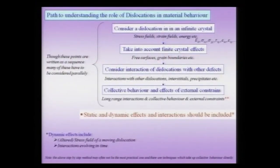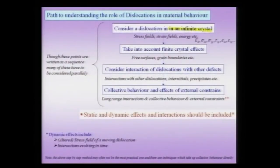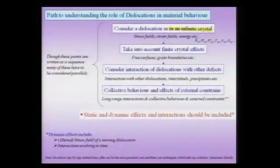To understand the role of dislocations in material behavior, similar to the path we undertook for understanding any kind of defect, we will first consider an isolated dislocation in an infinite crystal. This is an ideal description, and we know there are no truly infinite materials — we will always deal with finite-size crystals, or even polycrystals. We will start with this ideal description and try to understand things like stress fields, strain fields, and the energy of a dislocation.